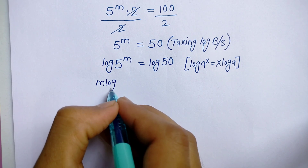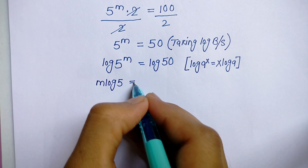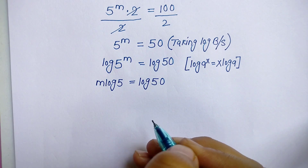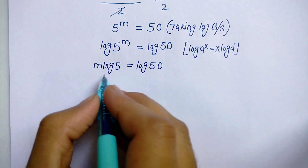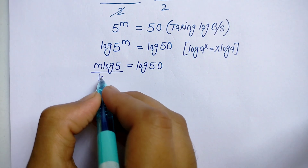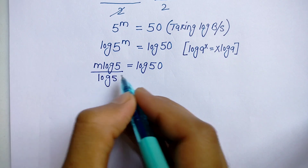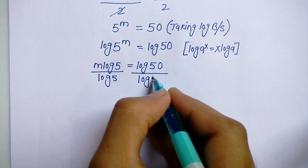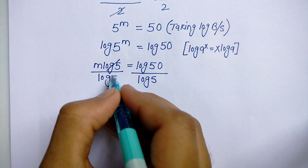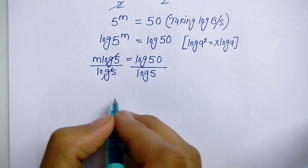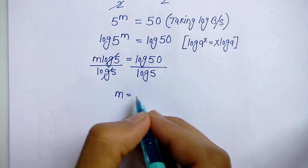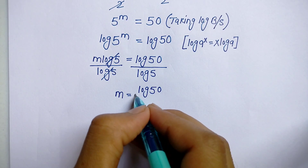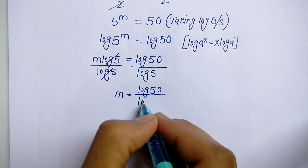Now we divide both sides by log 5. The log 5 terms cancel, so m is equal to log 50 upon log 5.